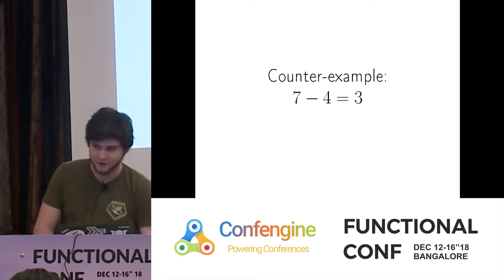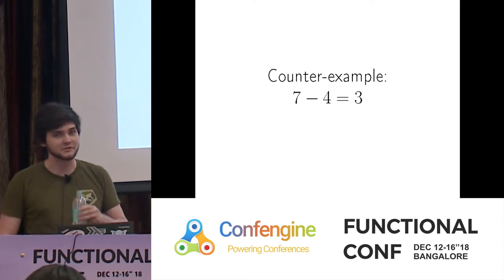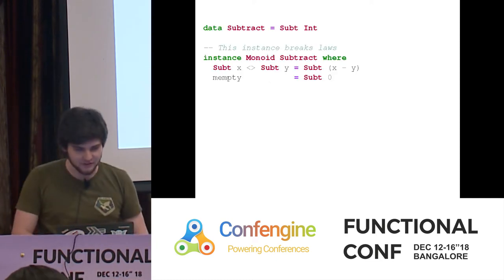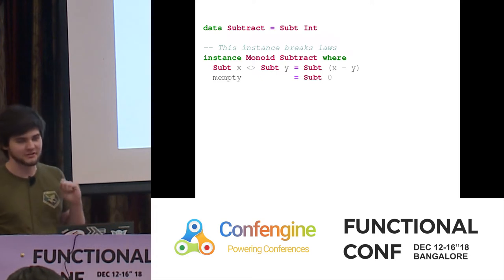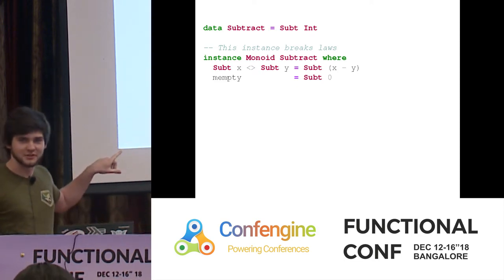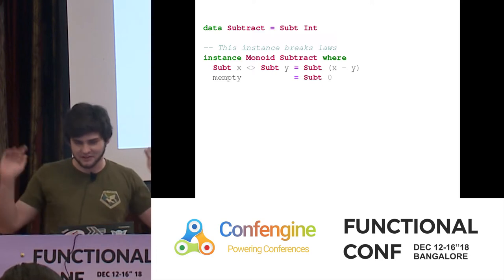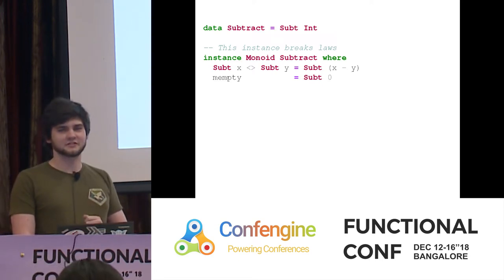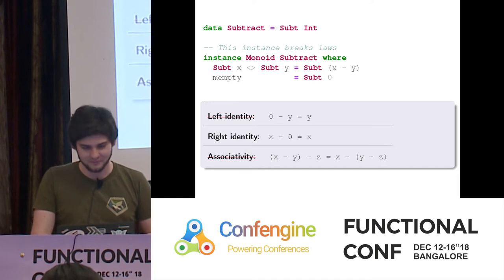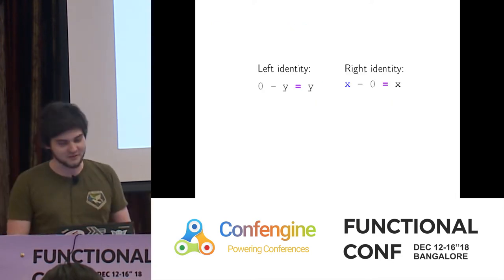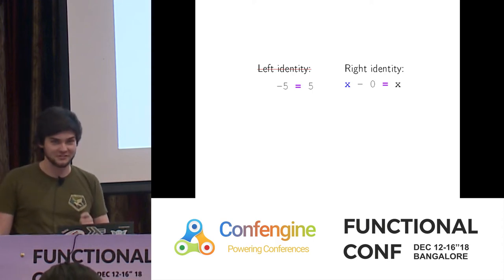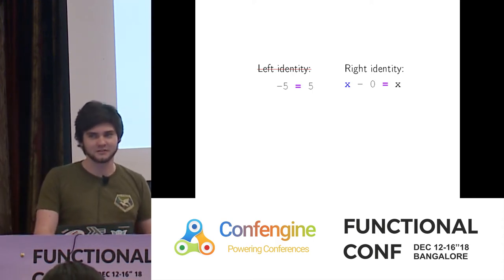I want to show you why the laws matter by giving a counterexample: something that's not a Monoid. My counterexample is subtraction. Subtraction does not form a Monoid. We could make a broken Monoid instance where combining two numbers means subtracting one from the other, with empty being zero. But checking the laws, it breaks two out of three. Left identity would say zero minus Y equals Y — but negative five is not the same as five. We don't have left identity. We incidentally do have right identity.